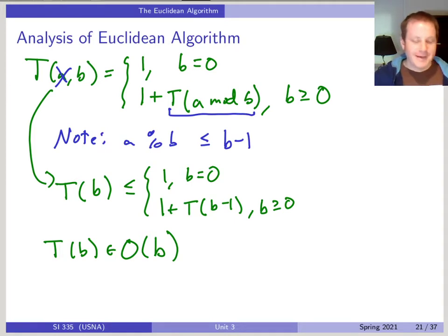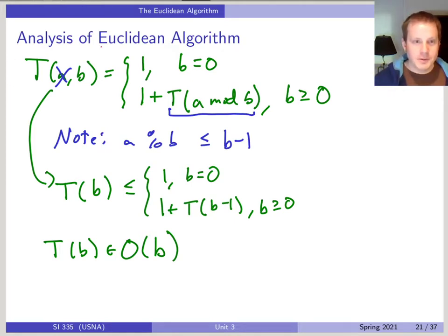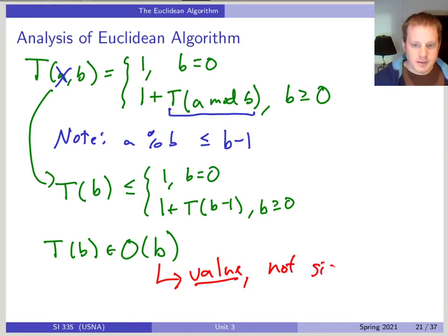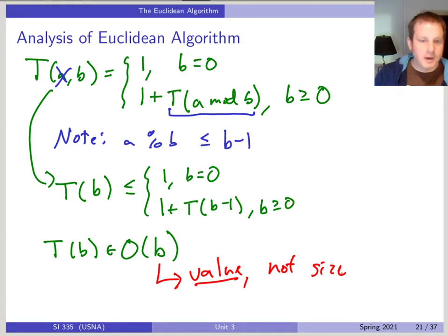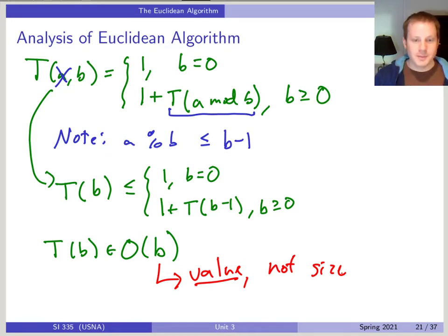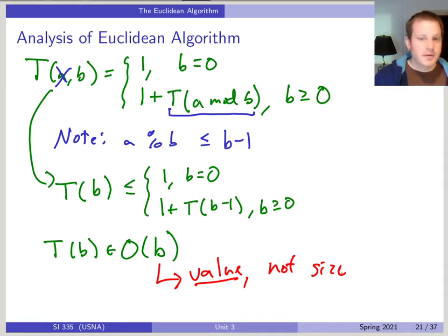But wait — I tricked you. As we learned, there's a difference between the size and the value of a number. This b is the value, not the size. The size is log b — that's how many bits it takes. If we have a 100-bit number b, then b is 2^100. That's bad. This says that for large numbers, even though it only takes a few bytes to store the number, this algorithm will essentially never terminate.